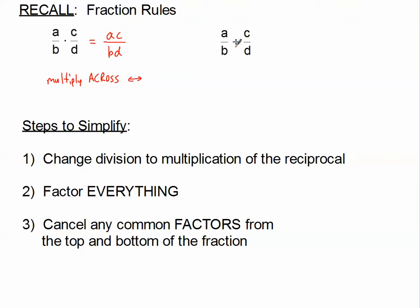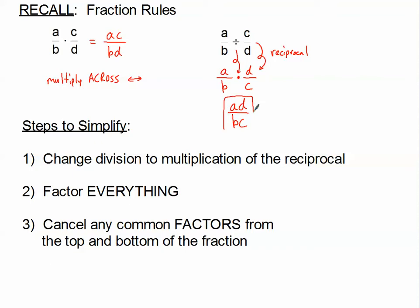When we have a division problem, the first thing we need to do is change that division problem to a multiplication problem. We take the first fraction — we don't do anything with that — but we change the division to a multiplication by taking the reciprocal of the second fraction. Reciprocal basically just means flip it upside down. So dividing by C over D is the same as multiplying by D over C, giving us A times D over B times C.